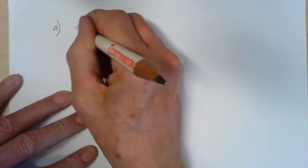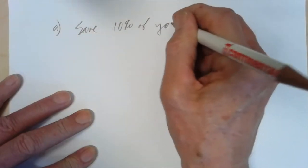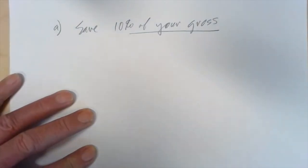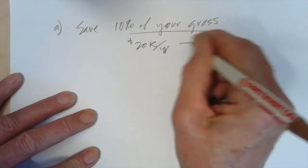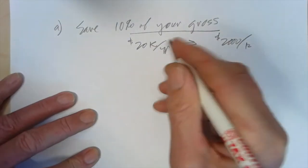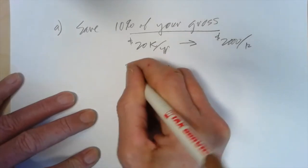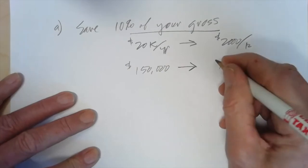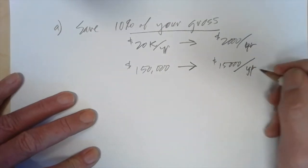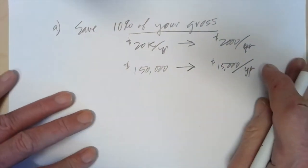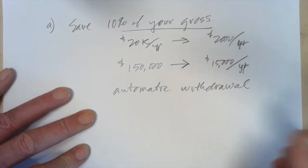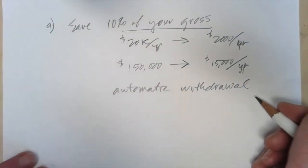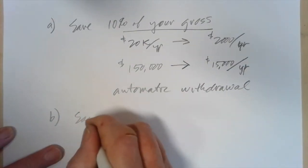So here's some good principles. Whenever you work, at any time, you save 10% of your gross. And you put that into your savings for retirement. So if you make $20,000 per year, you save $2,000 a year. If you make $150,000 a year, then you automatically take $15,000 and you put it away. That's a very good approach. And I would have an automatic withdrawal. So you don't see the money, and it takes effort on your part to take it out of the bank or financial institution to spend.